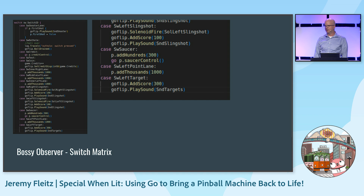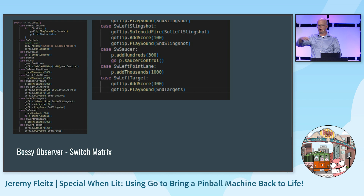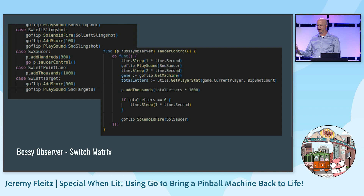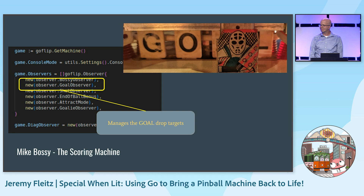The rest of the switch handler shows examples like the slingshot — the rubber band with a solenoid on the back — where when a ball hits it you fire the solenoid to push the ball away and give 100 points. The saucer control for the Mike Bossy saucer at the top gives a little pause to let the excitement build, looks at the total number of letters already collected, calls add thousands with that total, then after a second fires the solenoid to eject the ball.